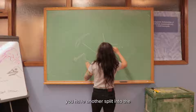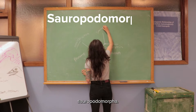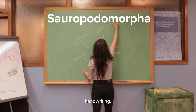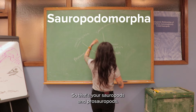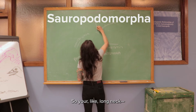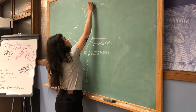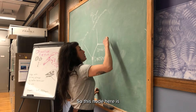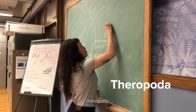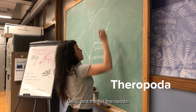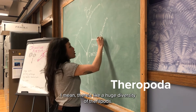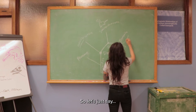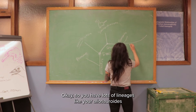In Saurischians you have another split into the Sauropodomorphs — that's your sauropods and prosauropods, your long-necked dinosaurs. And this node here is Theropoda. There's a huge diversity of theropods.